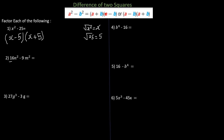In the second example we have coefficients on n squared and m squared. We need to find the square root of 16n squared: the square root of 16 is 4, and the square root of n squared is n. Also, the square root of 9m squared: the square root of 9 is 3, and the square root of m squared is m. So the answer will be 4n minus 3m times 4n plus 3m.